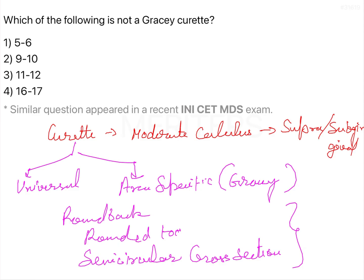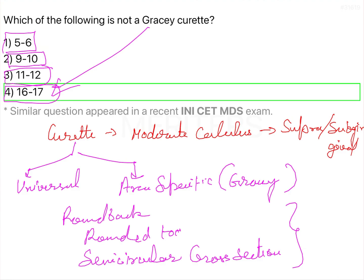So if the question asks which of the following is not a Gracey curette: 5 and 6 are used for anterior sextants; 9 and 10 are used for buccal and lingual aspects of posterior sextant teeth; 11 and 12 are used for mesial aspect in posterior sextants. But 16 and 17 have not been discussed because they are not used and are not considered Gracey curettes. So the correct answer is option 4 — 16 and 17 is not a Gracey curette.